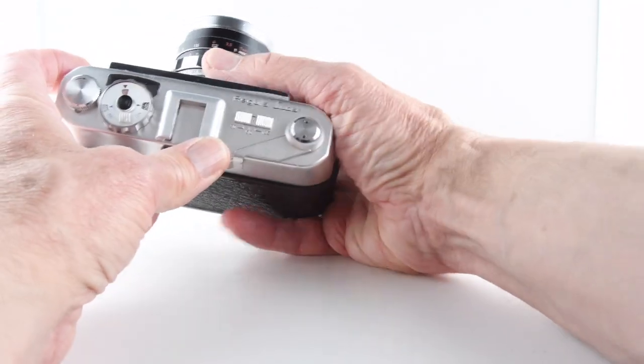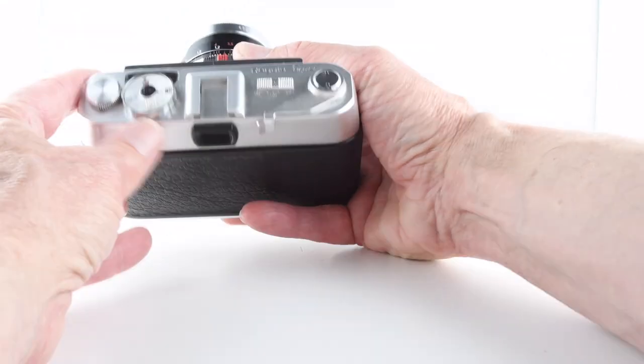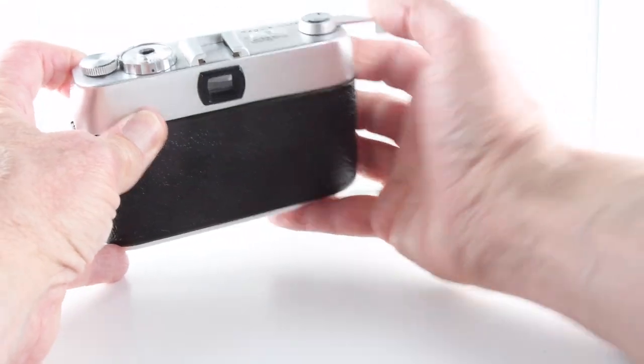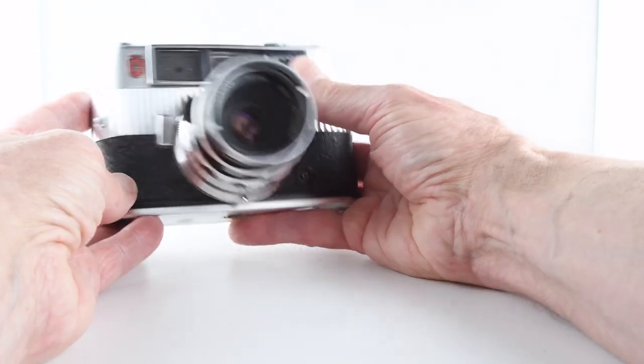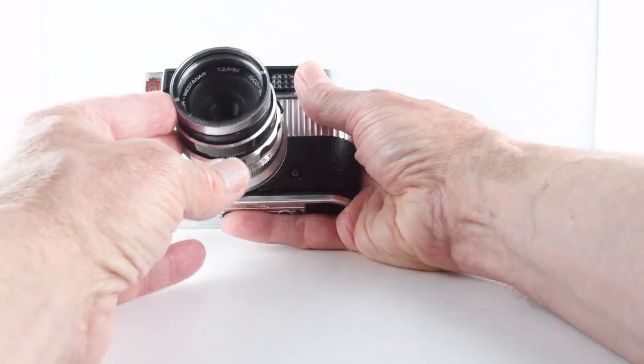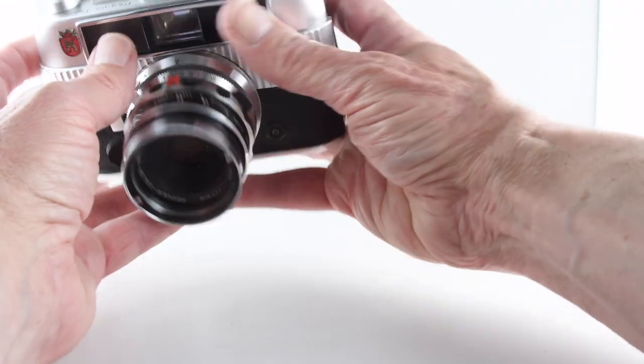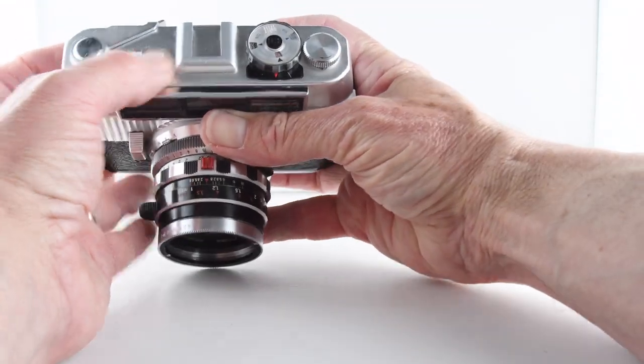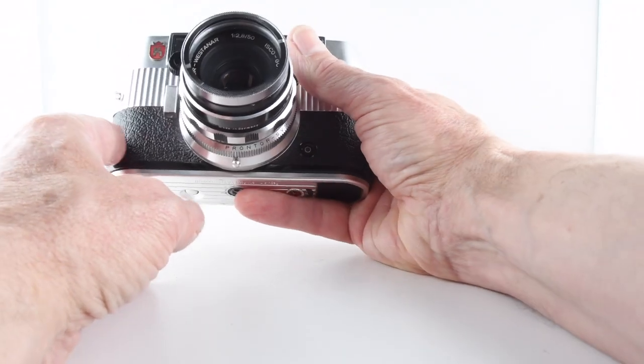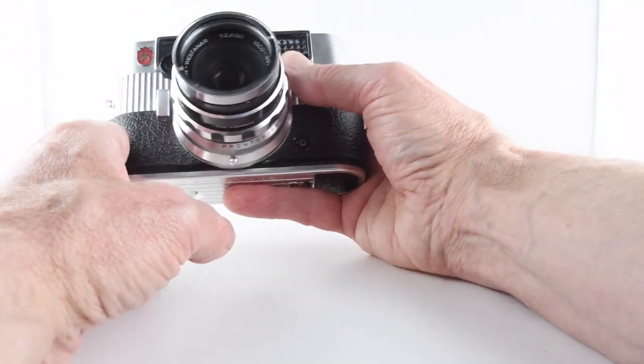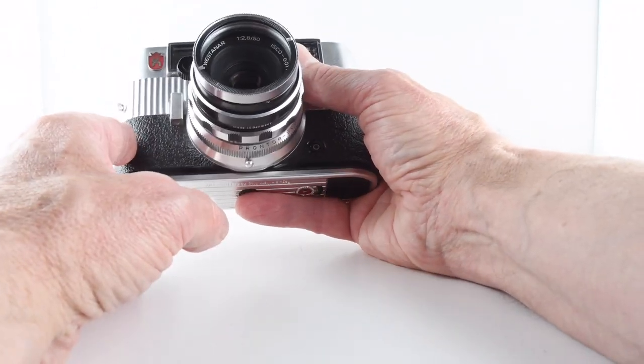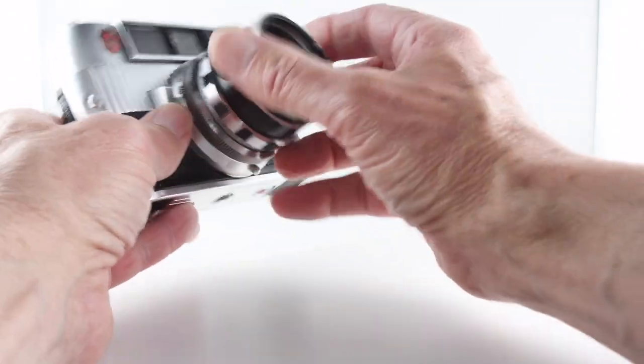We have our film wind-on. Looking at the lens, this particular camera has a Western AR 50mm 2.8, so that's why we would put our dial on 50 millimeters, which is the standard view.